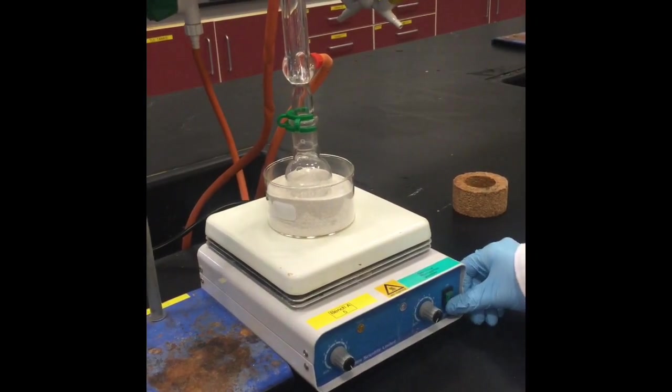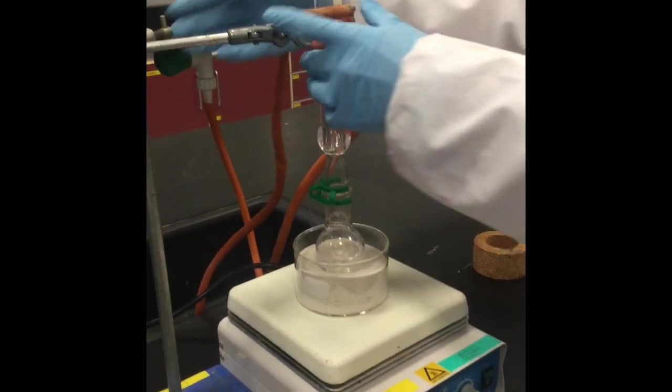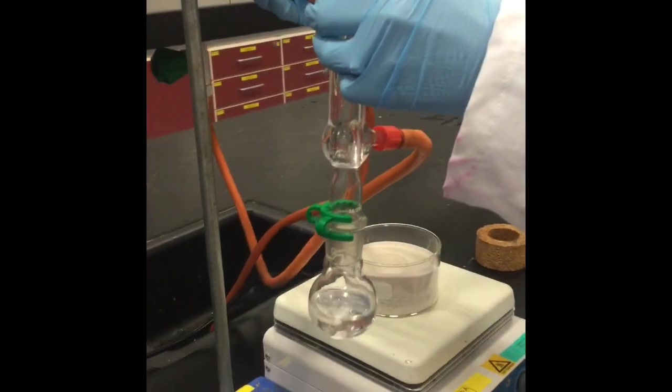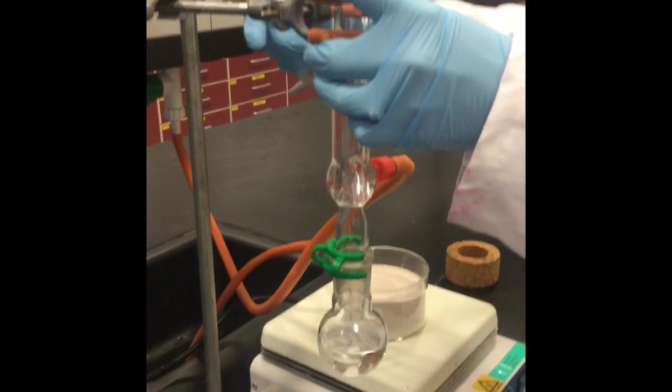When your reaction is finished, turn off your heating mantle. Using the clamp, raise your condenser and round bottom flask out of the sand bath. Let the round bottom flask cool down before touching it.